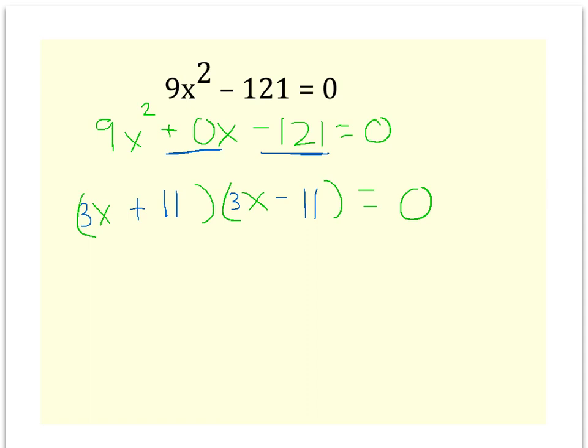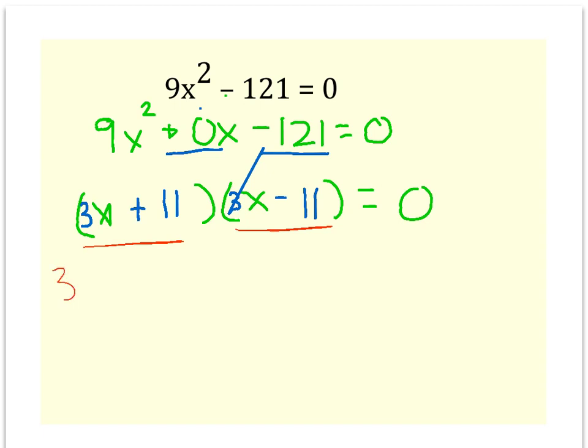Now if the problem just said factoring, you'd be done, but remember this is a solve by factoring problem. We have the equal 0 here. So we have to take both of our terms and set them equal to 0. 3x plus 11 equals 0.